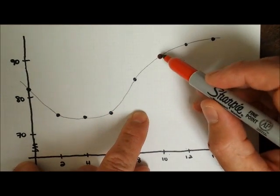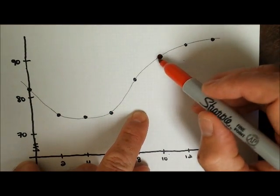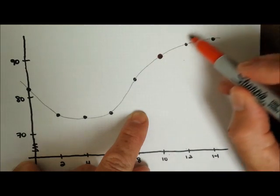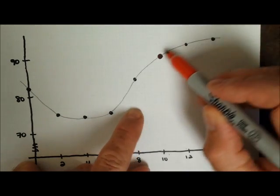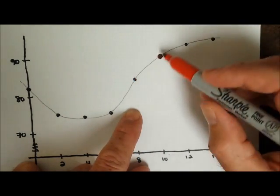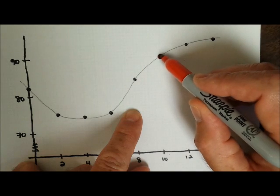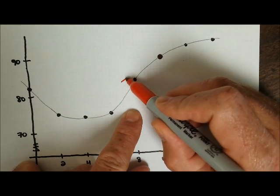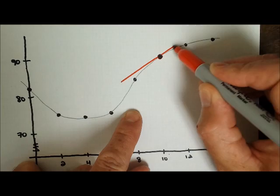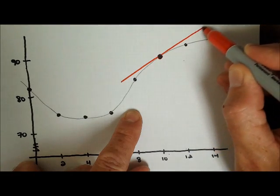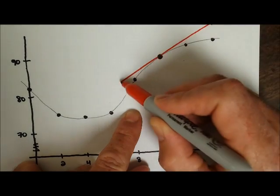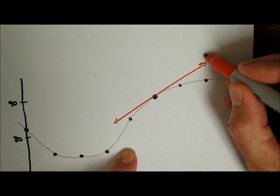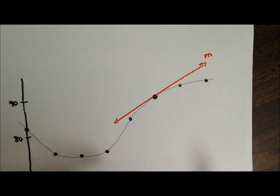What I'm going to do right now, just so we can see this, is freehand draw my best tangent line to the curve. We know that the tangent line just nicks the curve right at that point. So there's our tangent line, and our goal is to figure out what the value of that slope is.